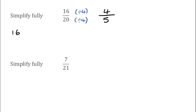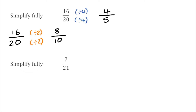We might not always notice the highest common factor though, and we might divide by something else instead. If we take 16 over 20 again and divide both by 2, we'd get 8 over 10, which is an equivalent fraction but not in its simplest form. We can still divide 8 and 10 by 2 again: 8 divided by 2 gives 4, and 10 divided by 2 gives 5. We're back to 4 over 5, and that would be the final answer because there's nothing else we could divide top and bottom by to simplify further.